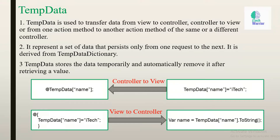Now let's move to TempData. First point: TempData is used to transfer data from view to controller, controller to view, or from one action method to another action method for the same or a different controller. Second point: it represents a set of data that persists only from one request to the next request.